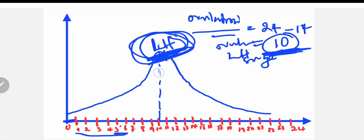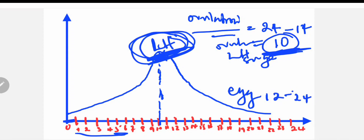Another thing to remember is that the ovum — the egg — stays viable for 12 up to 24 hours after ovulation. So when we determine the 10th day as ovulation, the egg is viable up to 24 hours, meaning from the 10th to the 11th day.